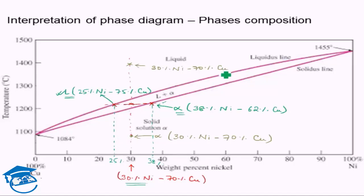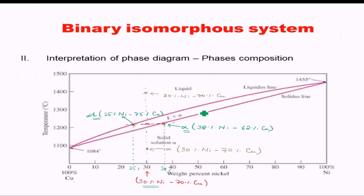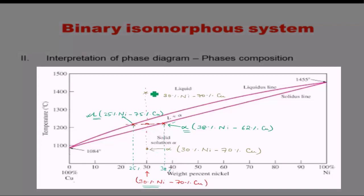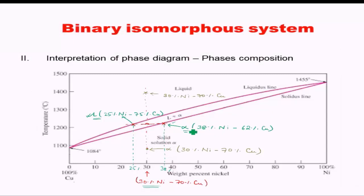Now, can we determine what amount of each phase is present? In single-phase regions it is obviously 100%. But in the two-phase region — for example with 25% nickel liquid and 38% nickel solid — how much liquid do we have? 20%, 50%, 80%? That is also possible to determine from the phase diagram using what is known as the lever rule.